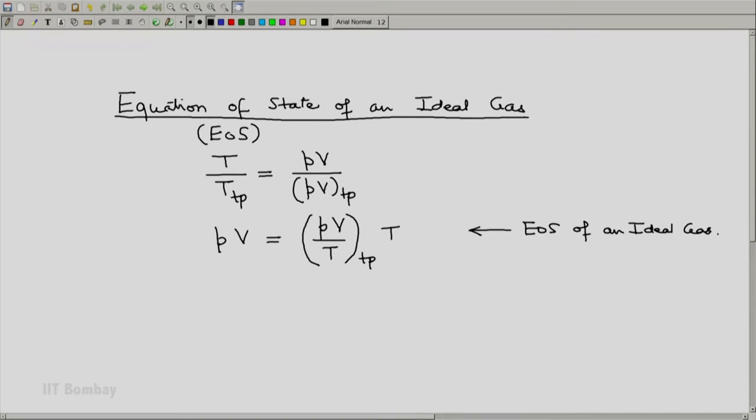Now you will notice that there is one parameter here. P and T are intensive properties but the volume is an extensive property. So this parameter will depend on the mass of the system or the actual volume of the system. What we do is write this in terms of specific mass, mass per unit volume.